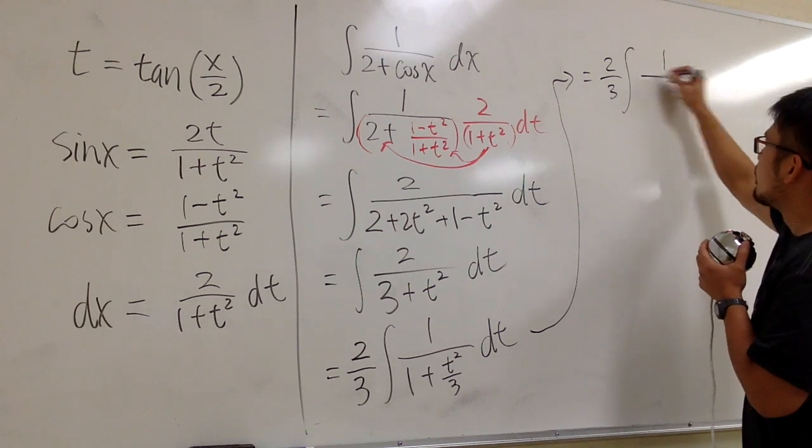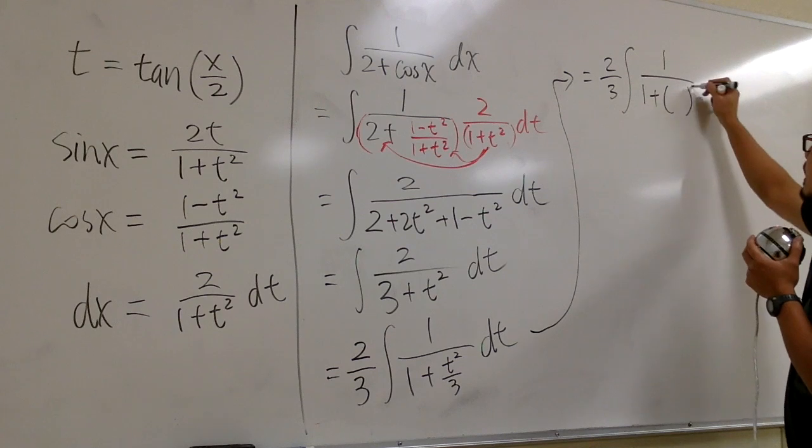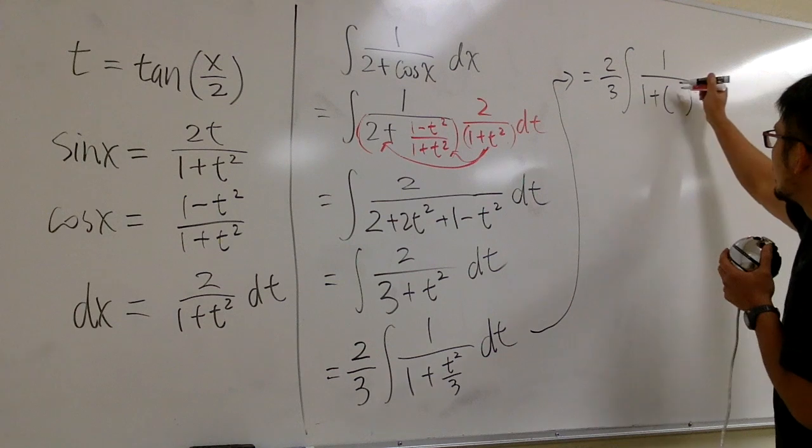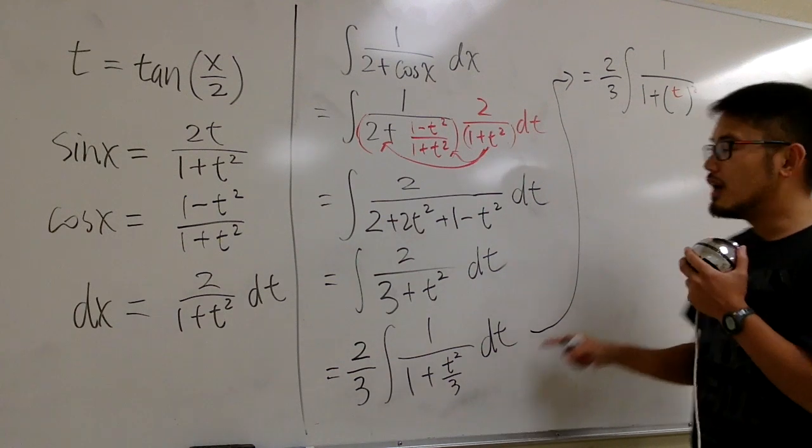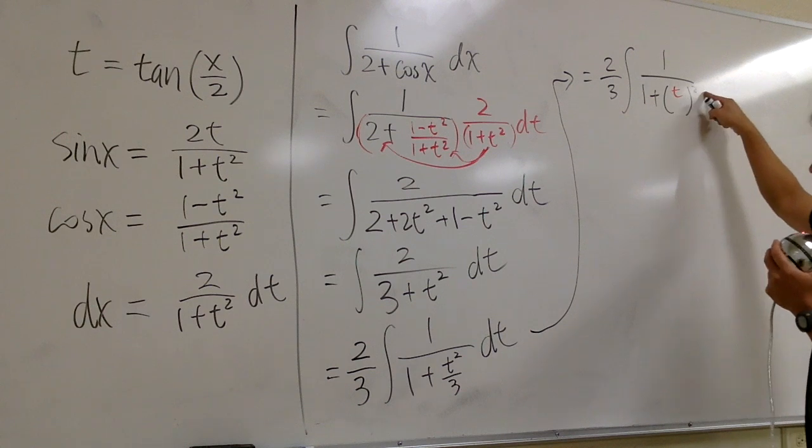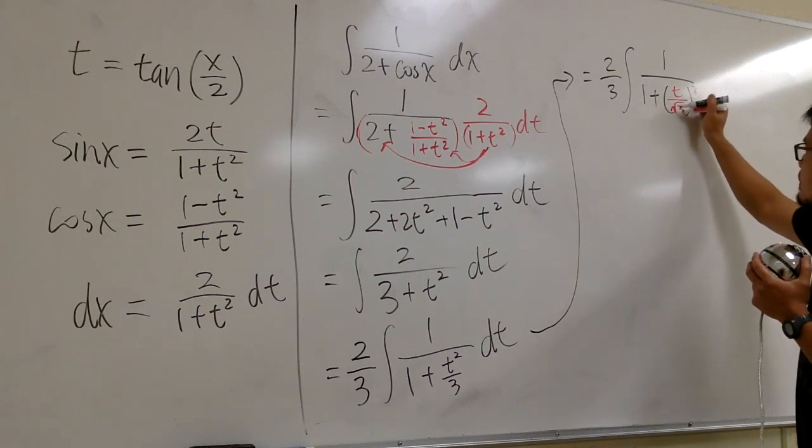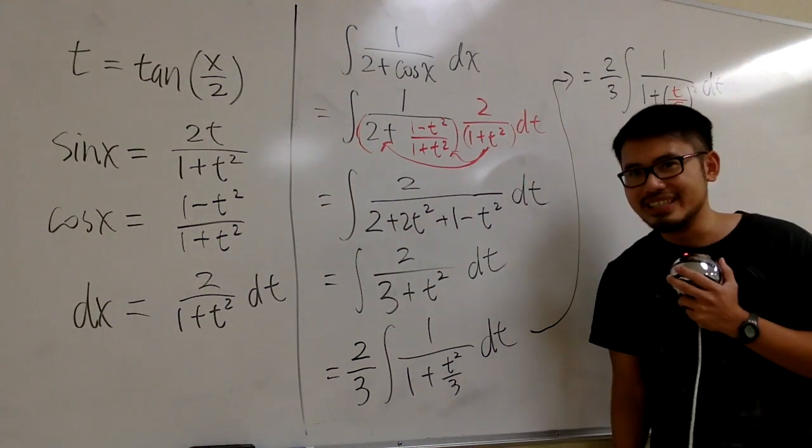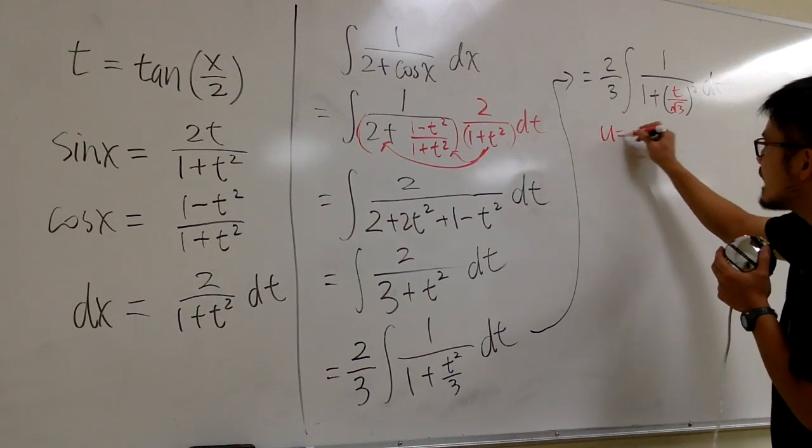This is 2 over 3, integral 1 over 1 plus. This is going to be, I want to write down something inside and then square. What should I put down? Well, t right here. No problem, but then, originally, this is the 3. I want to put this in the parentheses and then square. So, I should have over square root of 3, right? Square root of 3, square, give us the 3 right here.